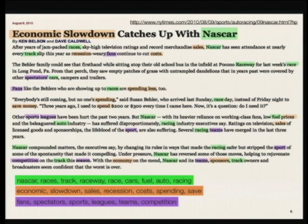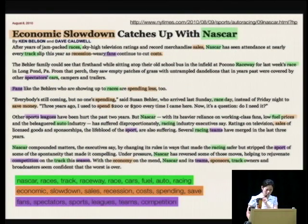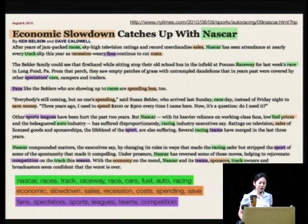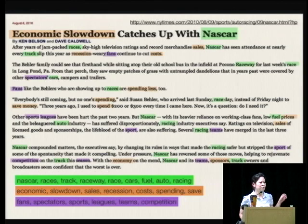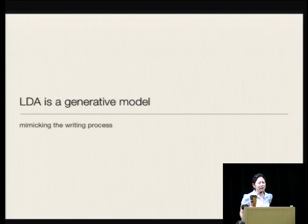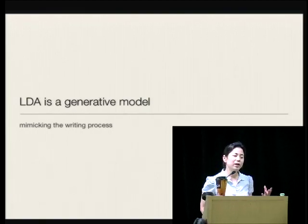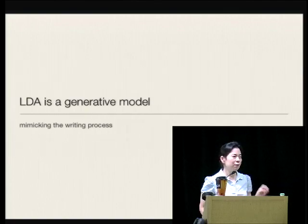The green topic is about NASCAR races - you can see words like NASCAR, track, raceway, cars highlighted throughout the document. The orange is about economic recession, with words like sales and costs. The purple is the general sports topic. The intuition and assumption behind topic models is that every document is made up of multiple topics, and the words in the document are generated from those multiple topics. LDA, latent Dirichlet allocation, is one of the simplest and most widely used topic models.